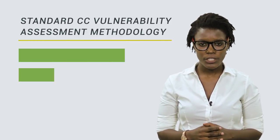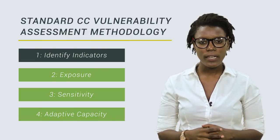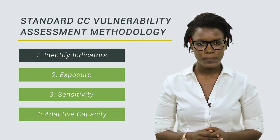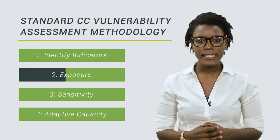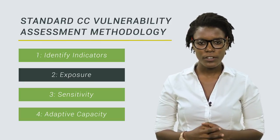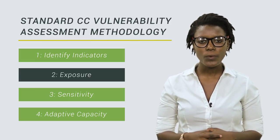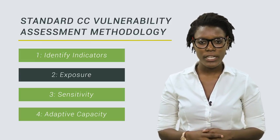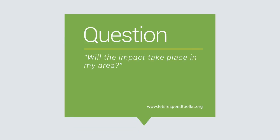In the previous video you looked at the first step of conducting a climate change vulnerability assessment, which was identifying a list of climate change indicators. In this video you're going to look at the second step, which helps you determine whether or not you're exposed to the climate change indicators. You can approach this step by asking yourself: will this particular impact take place in my area, or will I be exposed to this particular climate change indicator? You usually answer this exposure question with a yes or no answer.